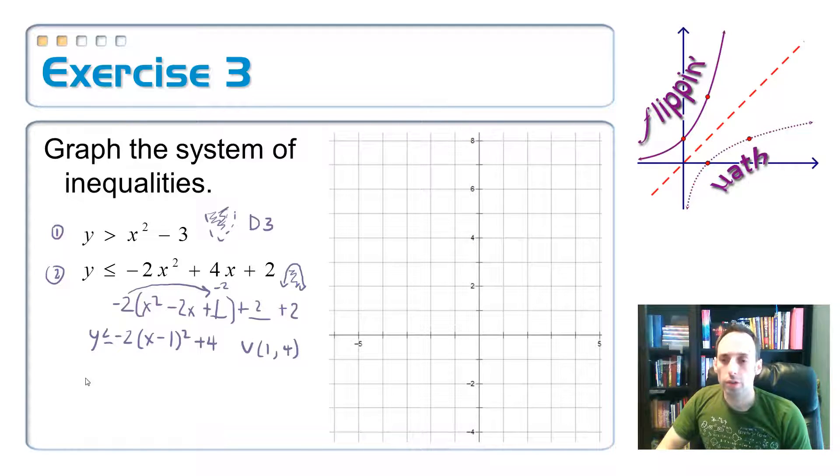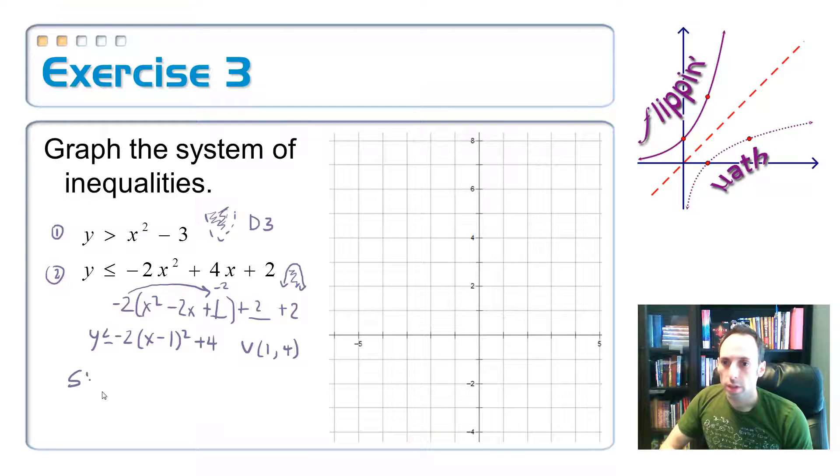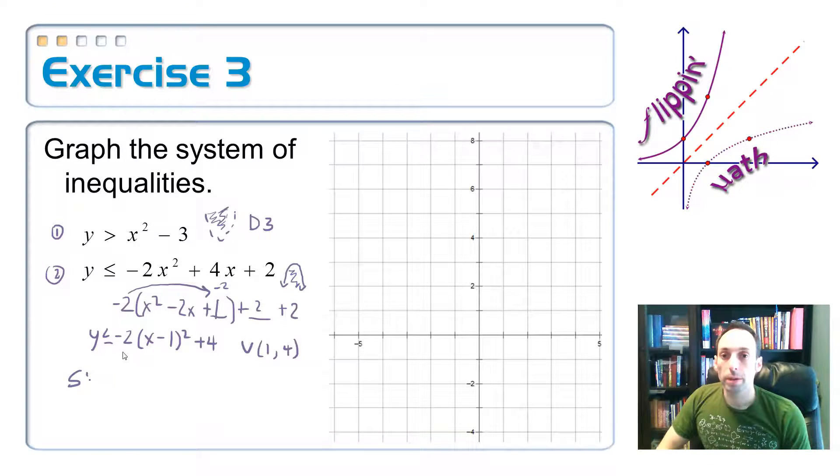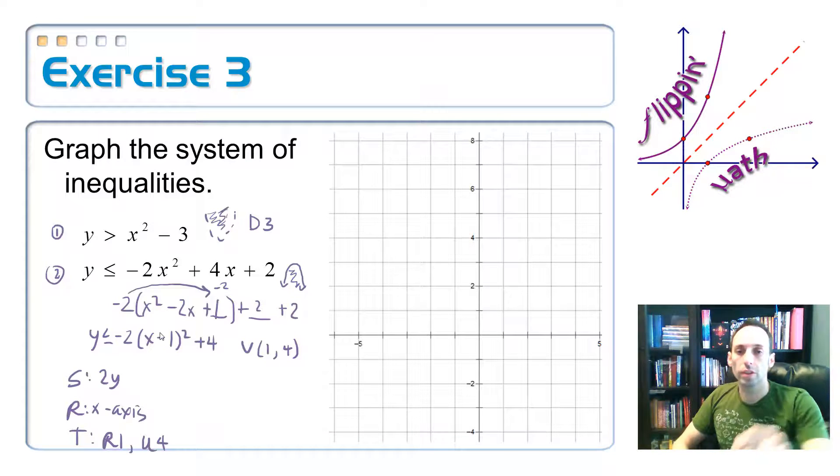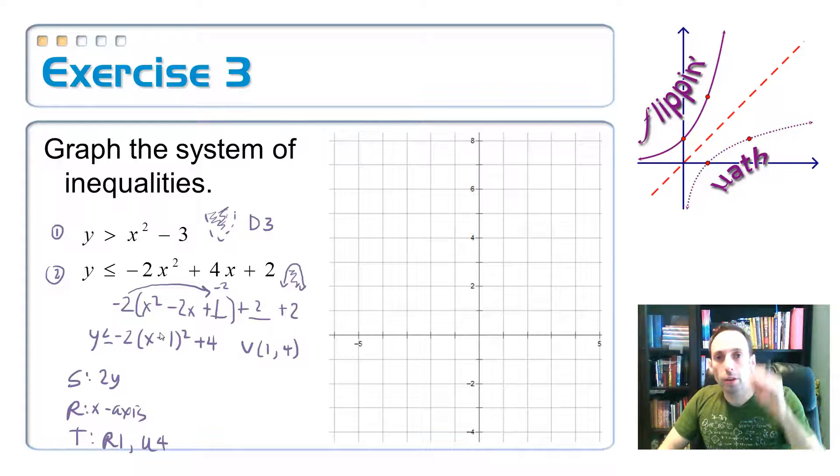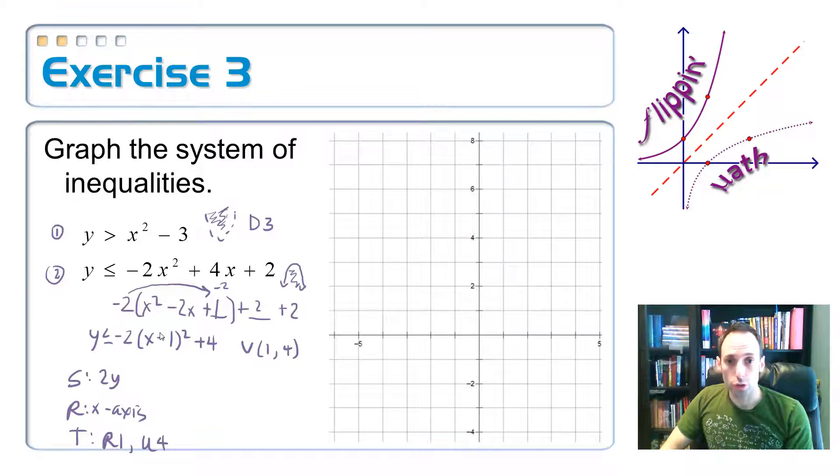If I'm going to do SRT transformations on this, the S goes, oh, I'm scaling it by two. There's a two up front, so two times Y coordinates. I am reflecting it across the X axis. And I am translating it right one and up four. Okay, putting all those things together and finding the appropriate shaded regions like so.